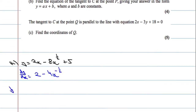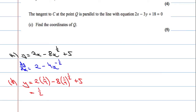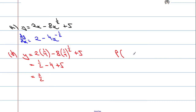I want to work out y when x is a quarter. So we get 2 times a quarter minus 8 times one quarter to the power of a half plus 5. 2 times a quarter is a half, the square root of a quarter is a half, and negative 8 times a half is negative 4. Adding 5 gives 3 over 2. So P is the point (1/4, 3/2).